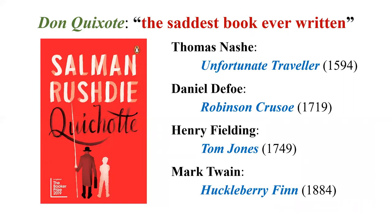In England we have Thomas Nash, one of the university wits, and his work The Unfortunate Traveler, considered a pioneer of the novel in England. But it was Daniel Defoe's Robinson Crusoe that is really the starting point of the English novel. Robinson Crusoe is a classic picaresque novel — he goes against his parents' words, lands on an island, lives there for 28 years, and meets a person called Man Friday. Published in 1719. Then we have Henry Fielding's Tom Jones, another picaresque novel featuring an orphan looked after by a wealthy man named Squire Allworthy.